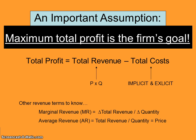An important assumption as we move forward is that maximum total profit is the firm's goal. There are companies out there that focus on charity, philanthropy, and non-profit organizations — but we're assuming in this class that we're studying for-profit organizations that want to maximize profits. Keep that as an assumption as we move forward.